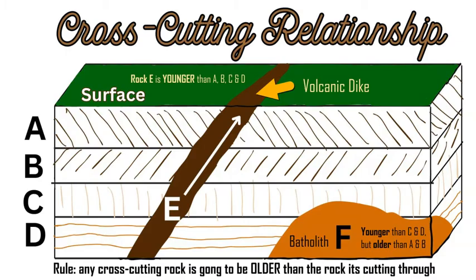We'd only know the precise ages if we did a different kind of calculation, which would be absolute dating — the use of radioactive decay and radiometric dating of isotopes. So this cross-cutting relationship is the understanding that any rock that goes through a pre-existing rock must be younger than that pre-existing rock.